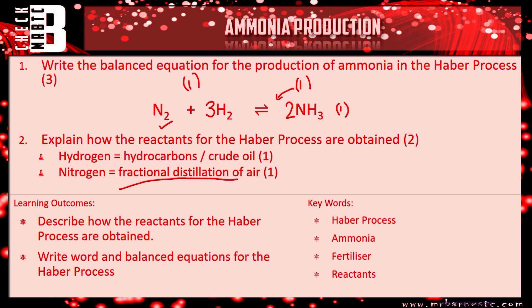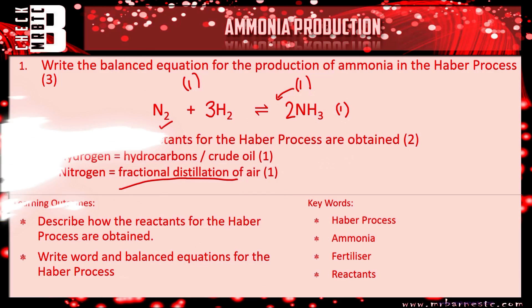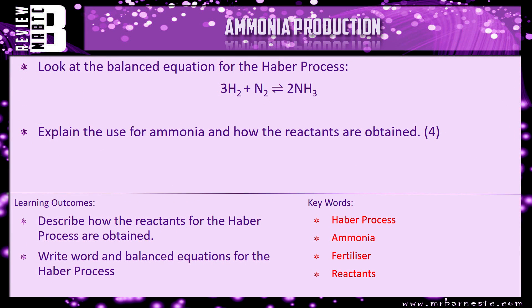Okay, that brings this video pretty much to an end. There is a review question for you. This time it gives you the balanced equation for the Haber process, and it says explain the use for ammonia and how the reactants are obtained. So what is ammonia used for, why do we need it, and how are the reactants obtained?